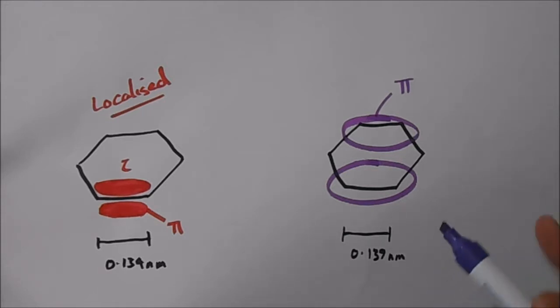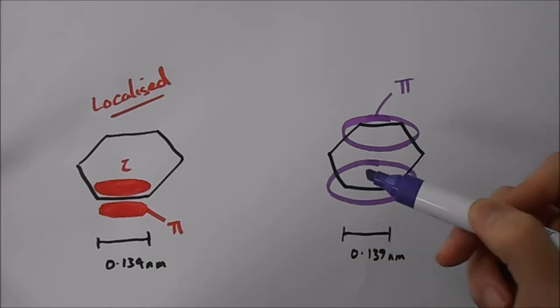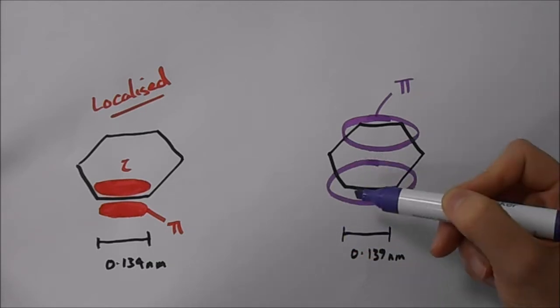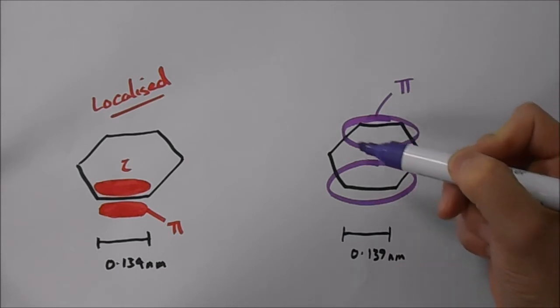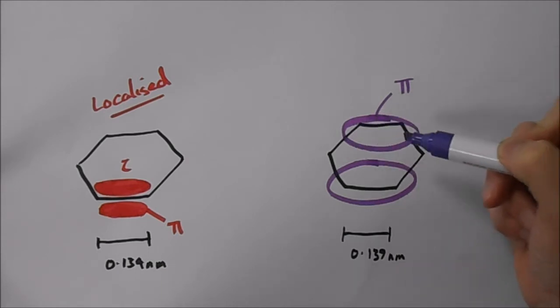But there's more to it than that. Because actually, these electrons that are delocalized, there are six of them. So actually, if you were to average out where the electrons are, you'd have one on each face.